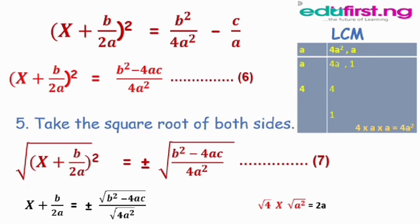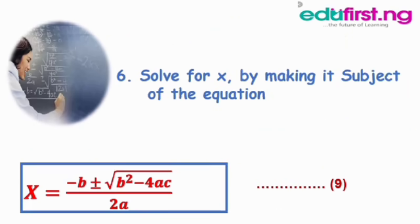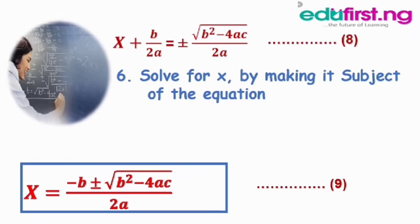At this point we have x plus b over 2a on the left side. Rule six says: solve for x by making x the subject of the equation. Moving plus b over 2a to the right hand side gives us negative b over 2a plus or minus square root of b squared minus 4ac, divided by 2a. Since the fractions have the same denominator, we group them together to get equation nine, which is our quadratic formula.